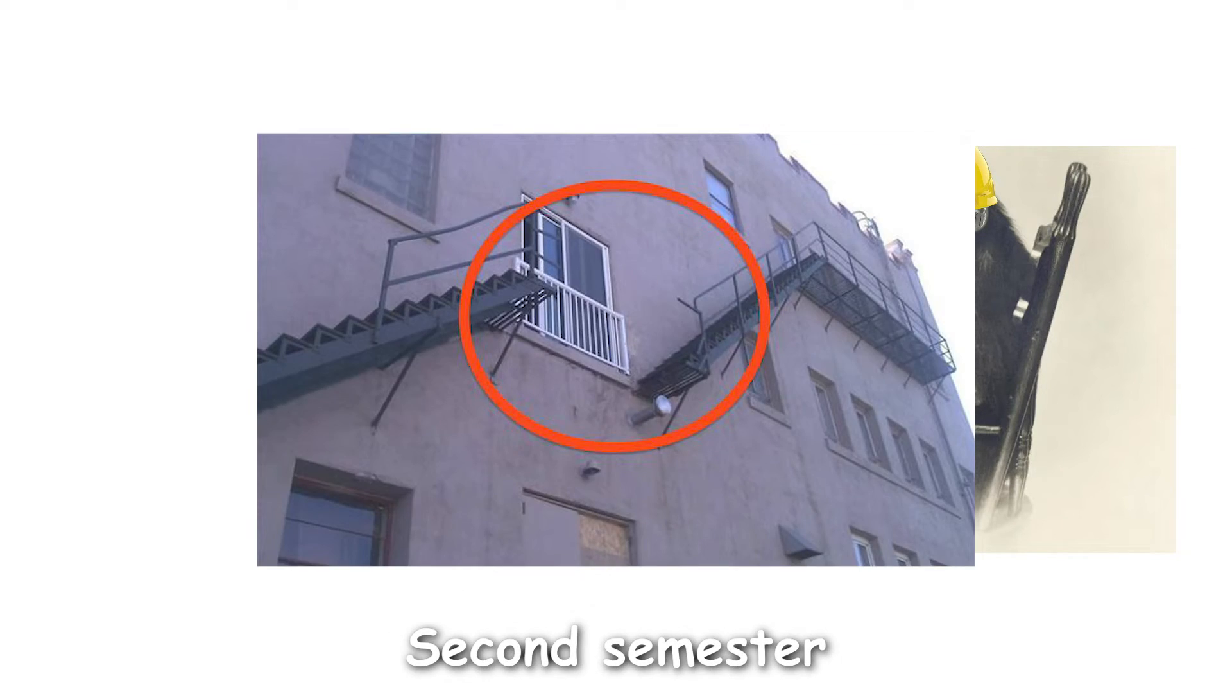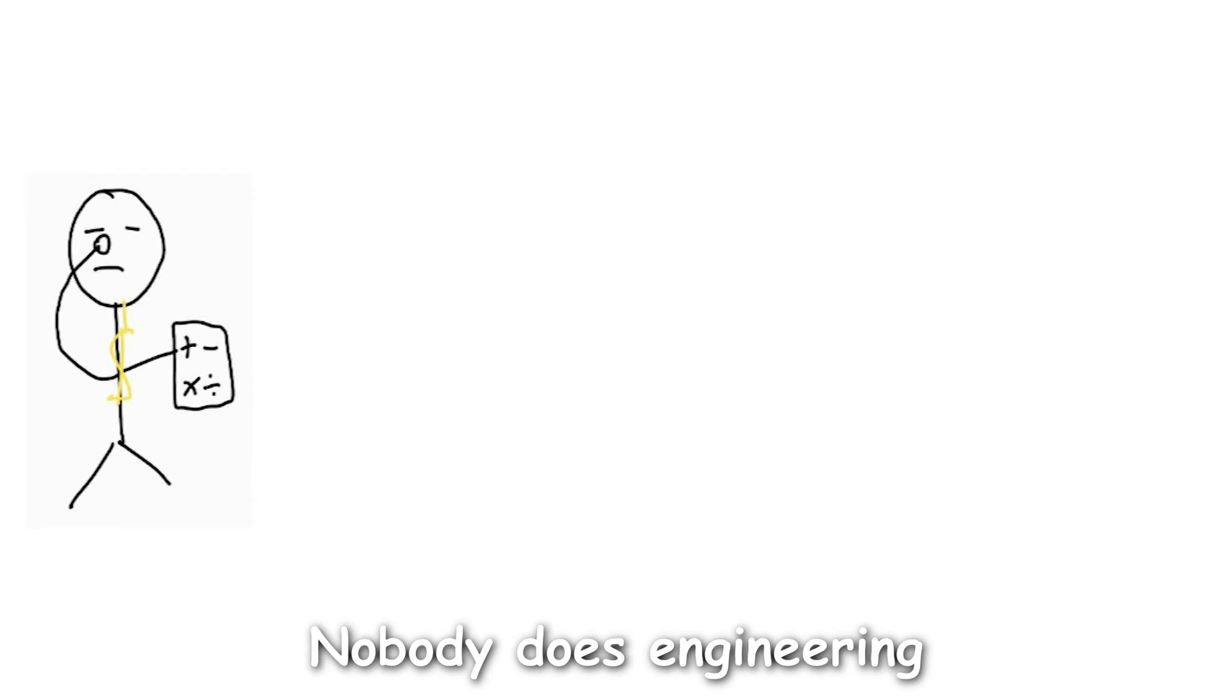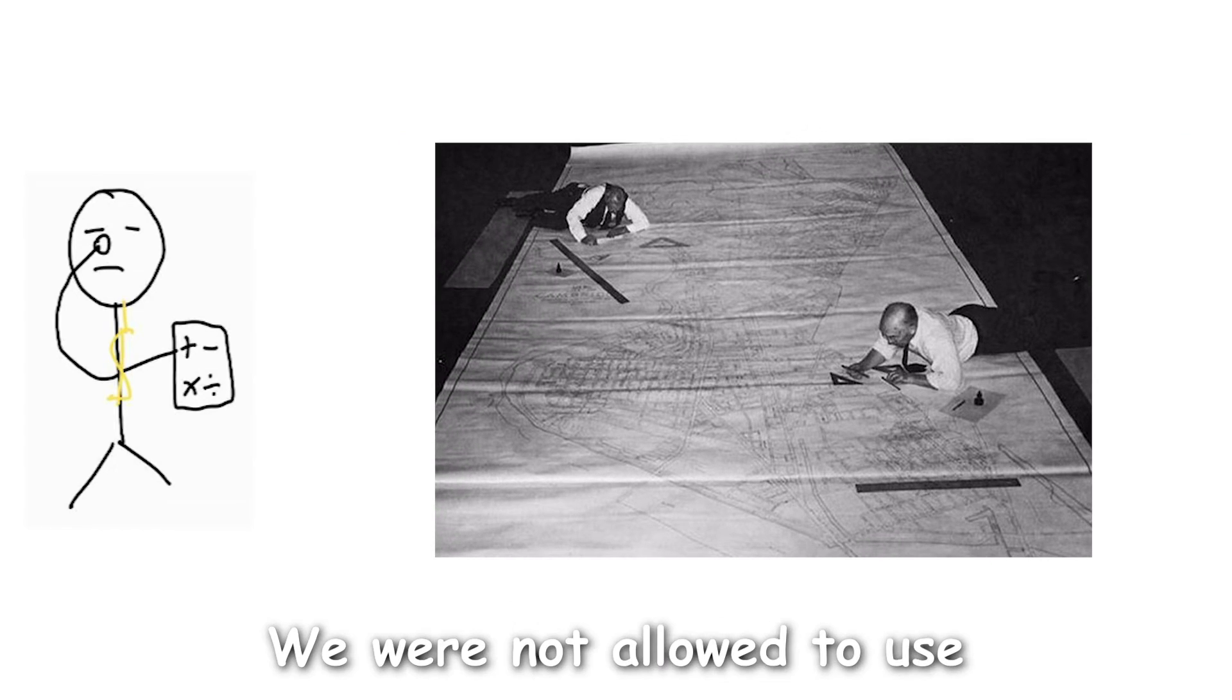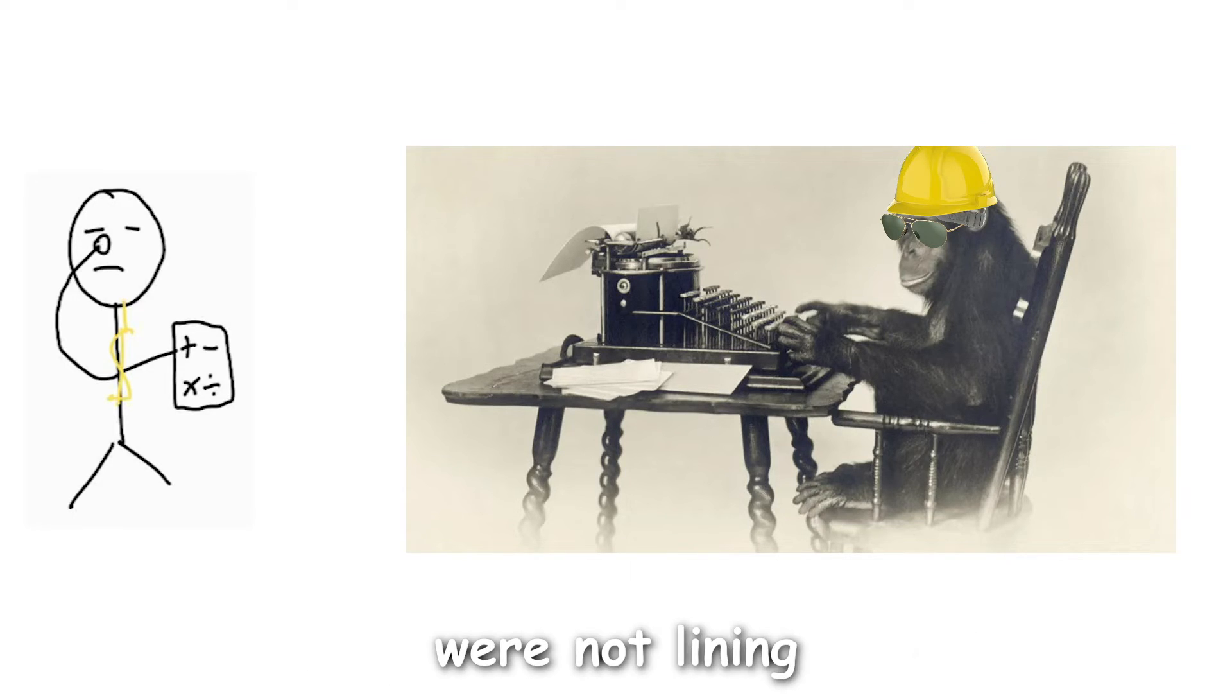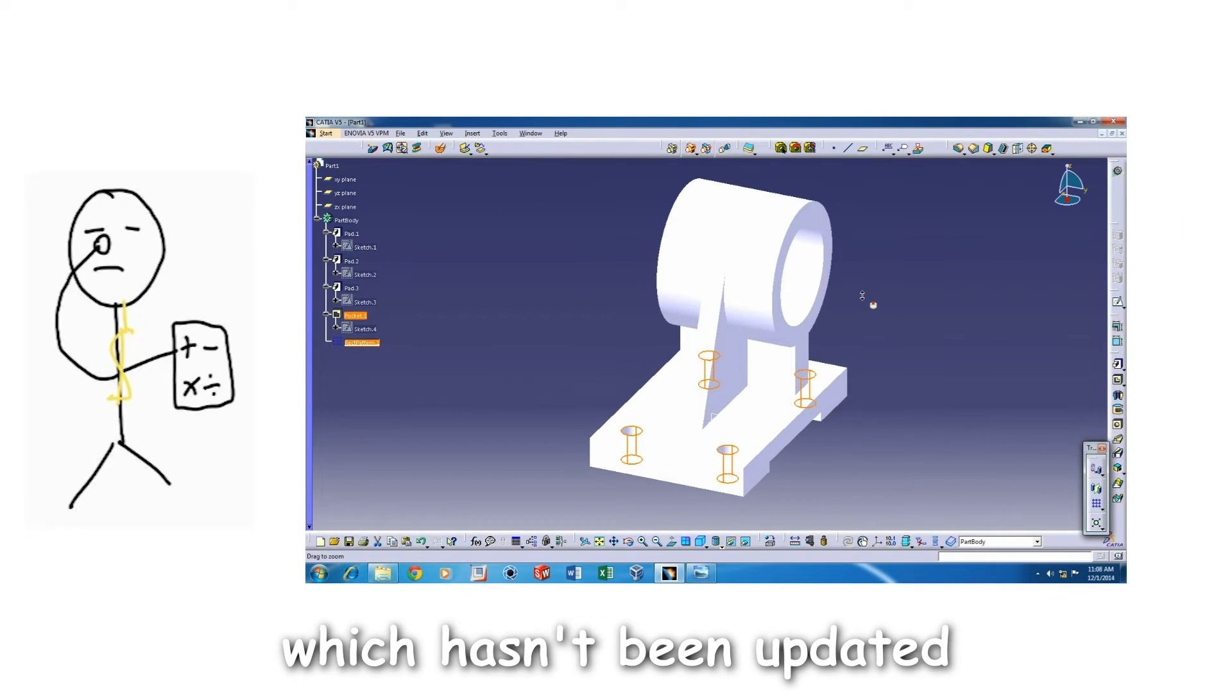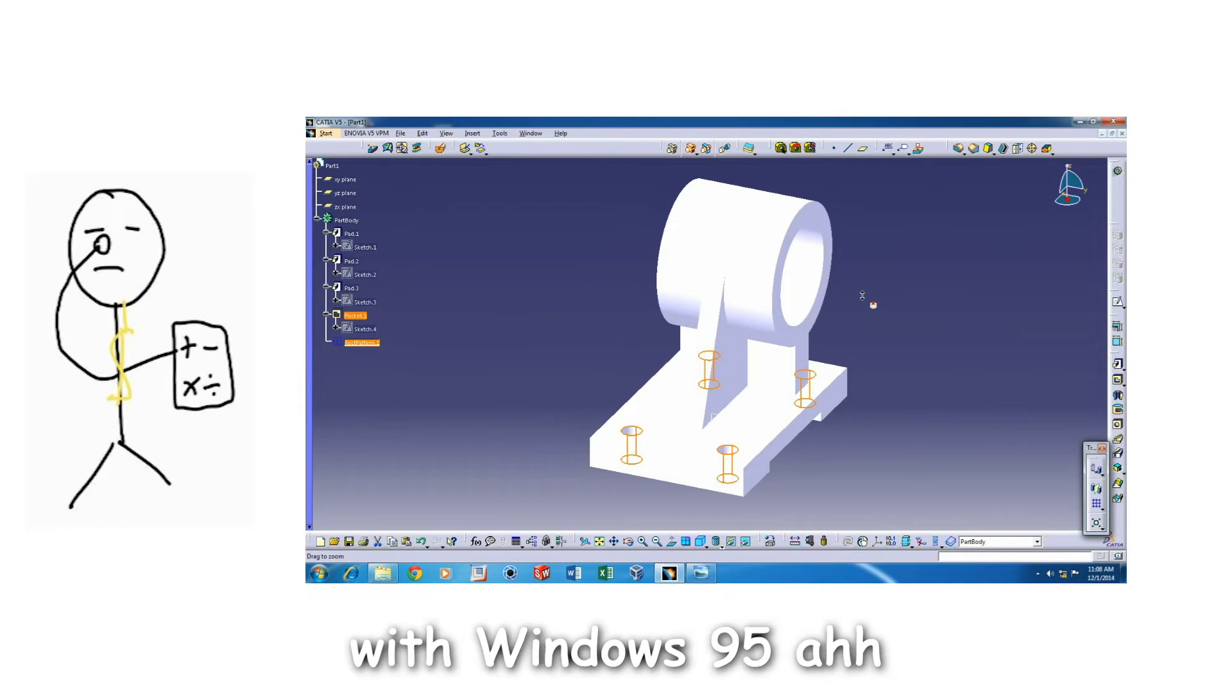Second semester Engineering Design. This class has got to be one of the most outdated things, bruh. Nobody does engineering drawings by hand. We were not allowed to use any drawing tools like compasses or rulers, and the profs took off marks if your lines and circles were not liney or circly enough, or the lines looked too straight and the circles were too curved. We also had to use the beloved software, CATIA, which hasn't been updated since 2007, with Windows 95 AI user interface.